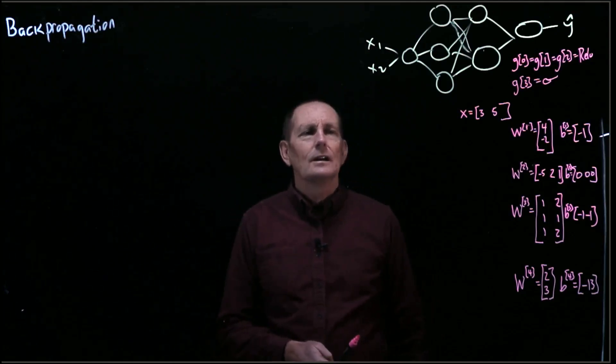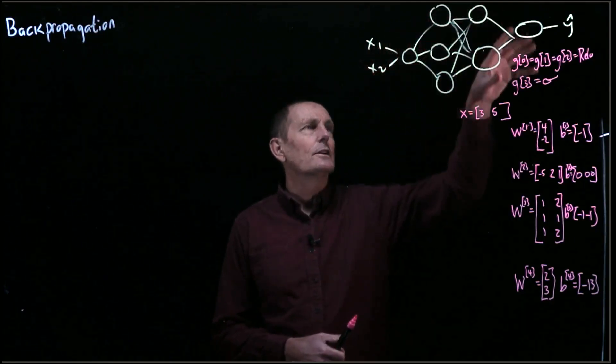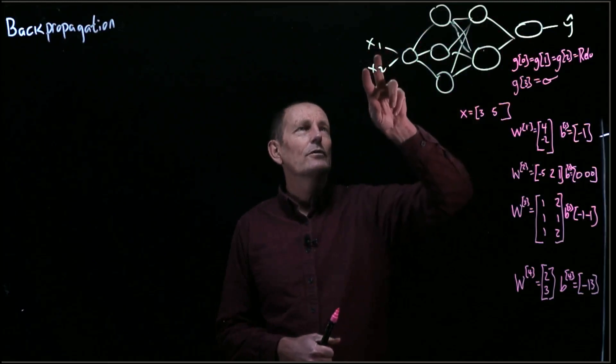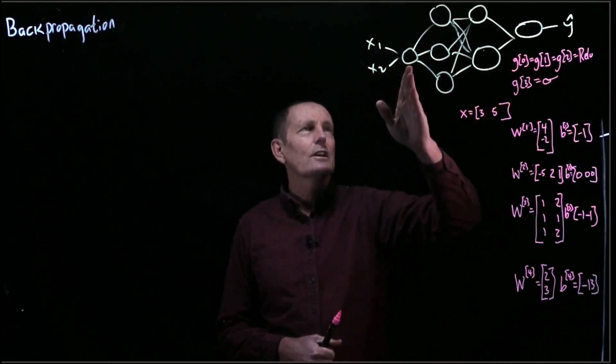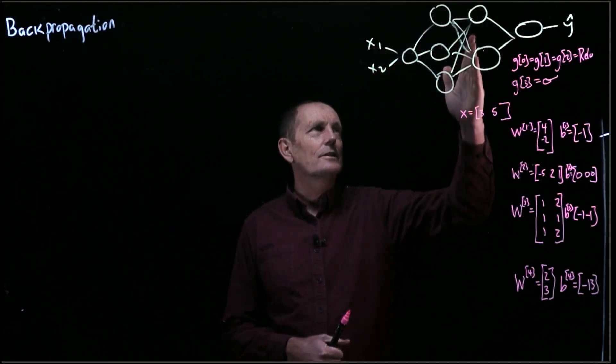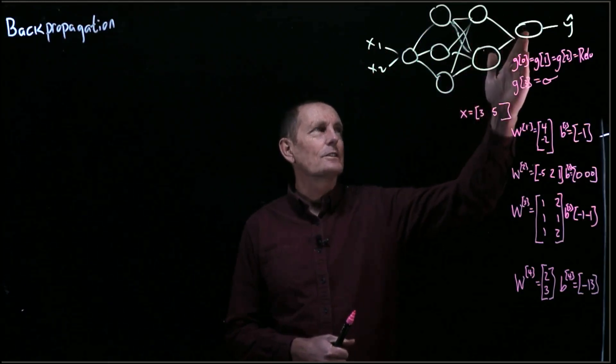All right, let's look at backpropagation with this particular network. So we've got two inputs. First layer has size 1, second layer has size 3, third layer has size 2, fourth layer has size 1.